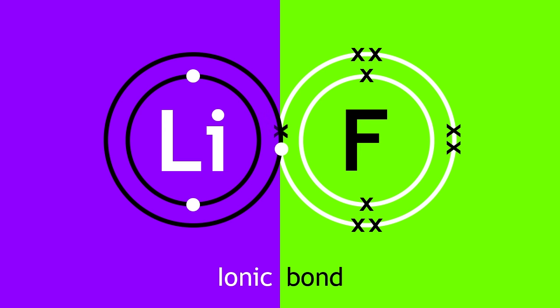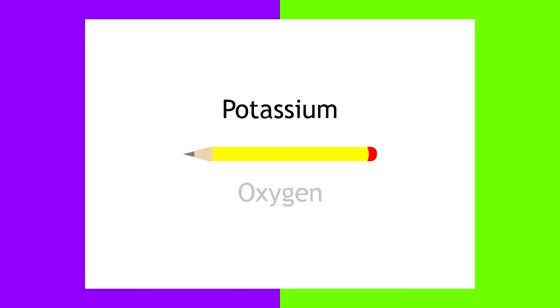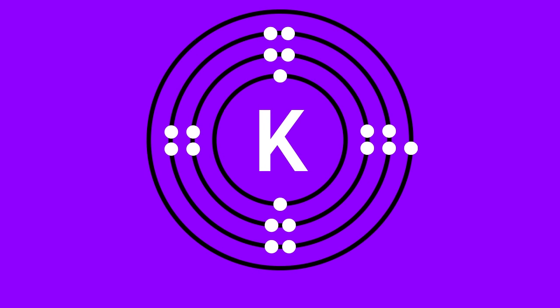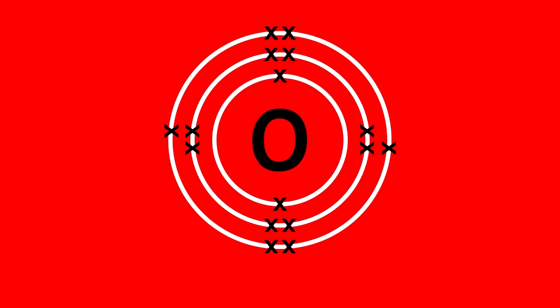Let's have a look at the next example. Grab a piece of paper and a pencil and draw the electronic structure of potassium and oxygen. Please pause the lesson and resume once you are done. Here are the structures. We can see that potassium has 1 valence electron, and oxygen has 6 valence electrons.